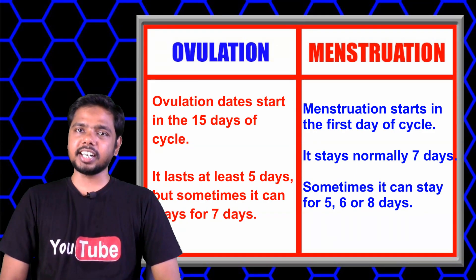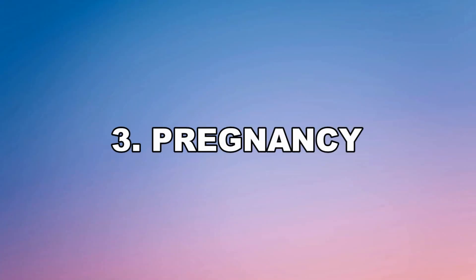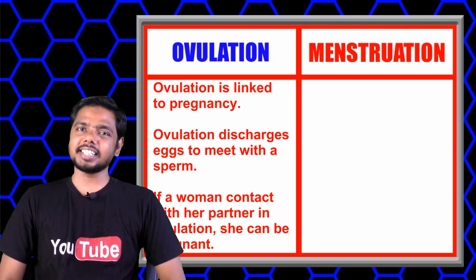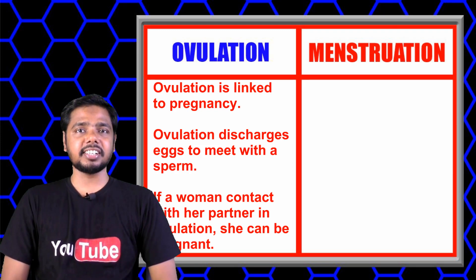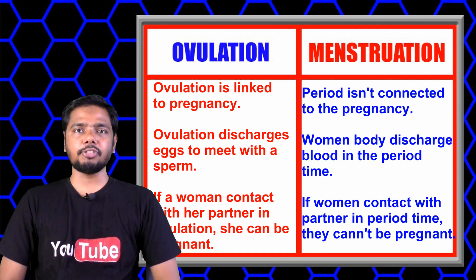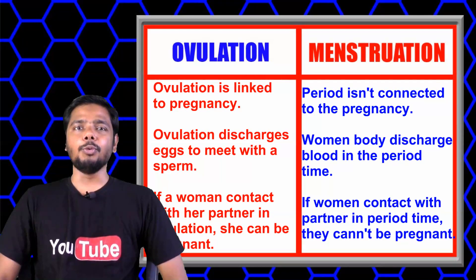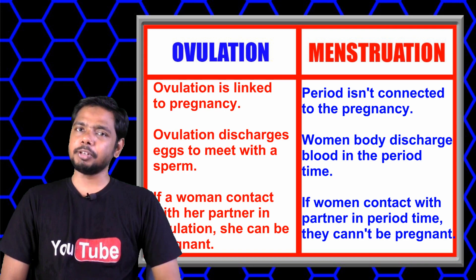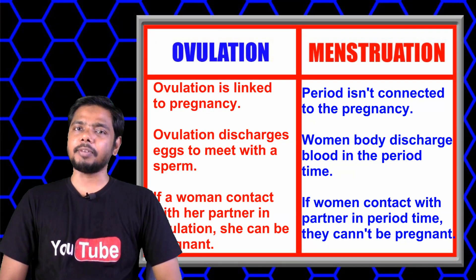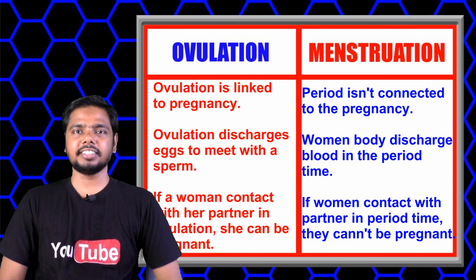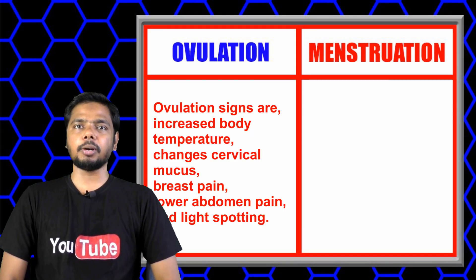If women feel an irregular period, their ovulation and menstruation dates can be unusual and irregular every month. Ovulation is connected to pregnancy — when a woman ovulates, she releases an egg to meet with sperm. But the period is not connected to pregnancy; the body discharges blood during that time. If a woman has contact with a partner during ovulation, she can become pregnant, but if she has contact during her period, she cannot become pregnant.